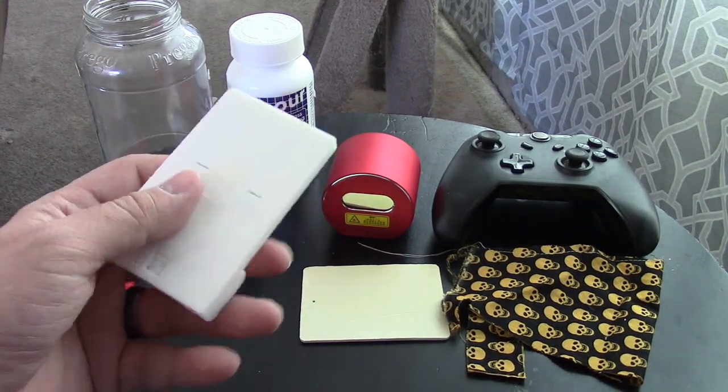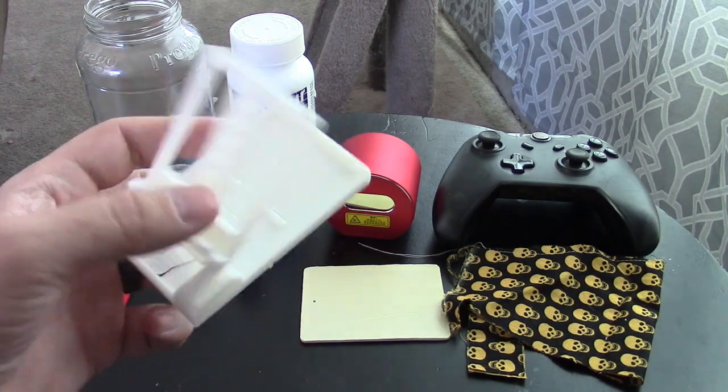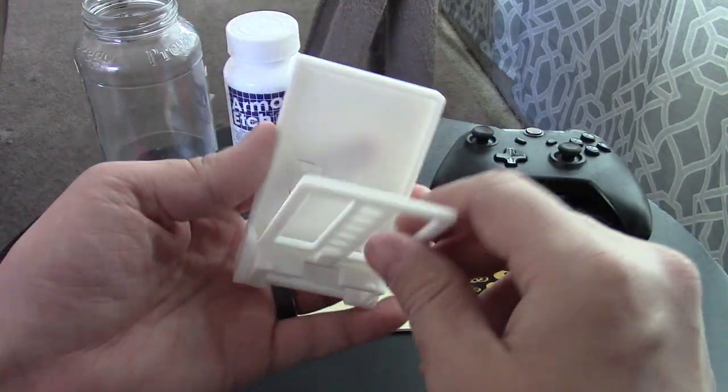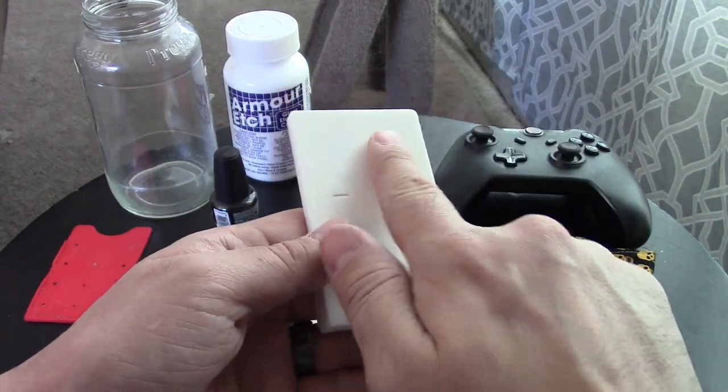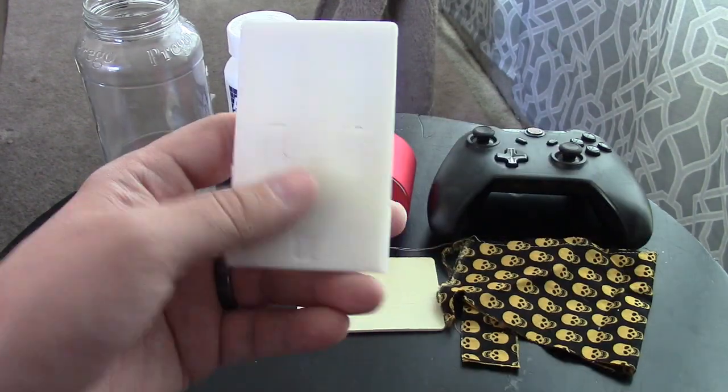We have some 3D printed PLA right here. This was a switch stand that I made and I just wanted to see if it could do anything to it. So what we're going to do is get like a dry erase marker and we're going to rub it all over here and then see if we can etch something into the PLA.